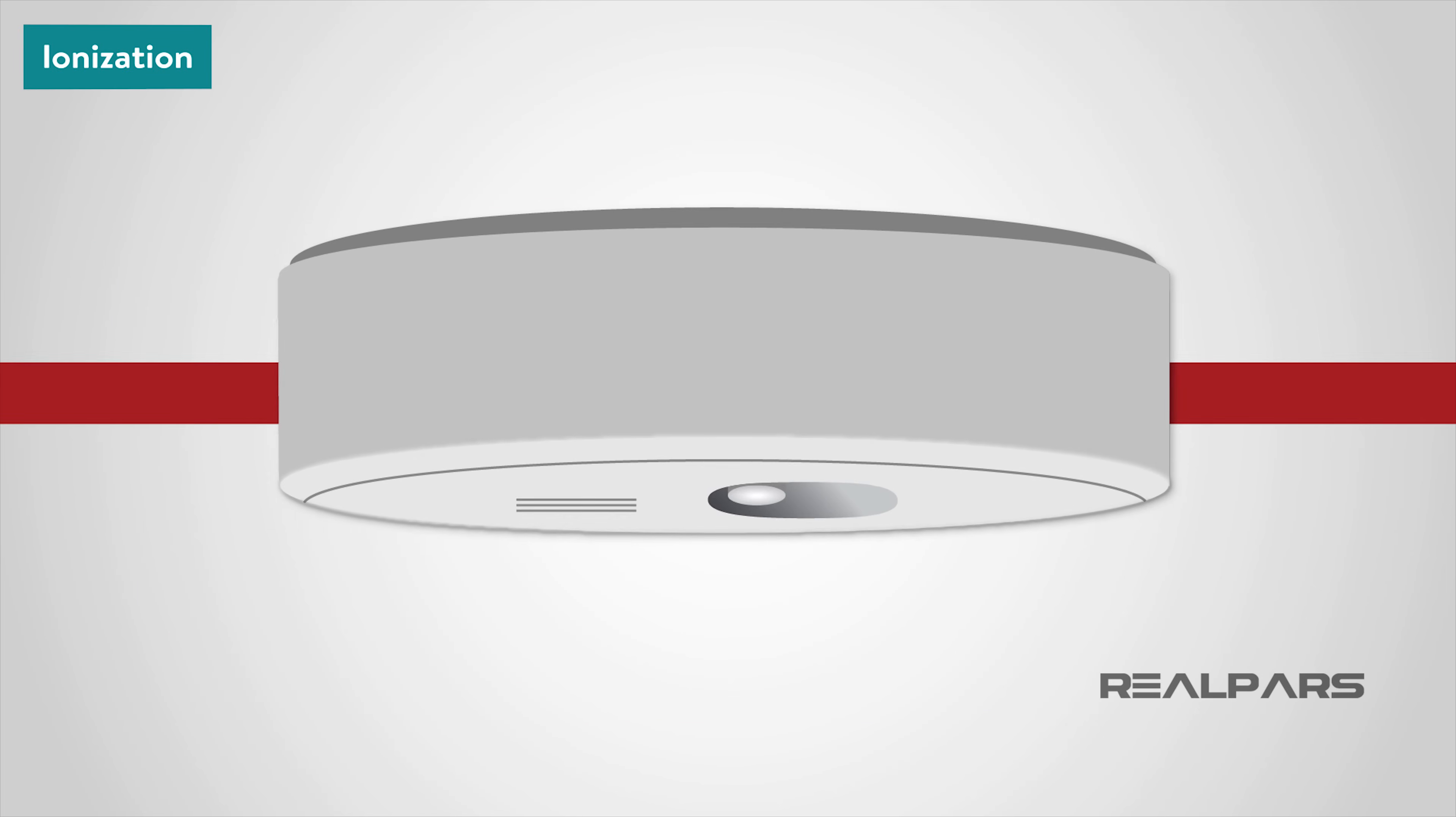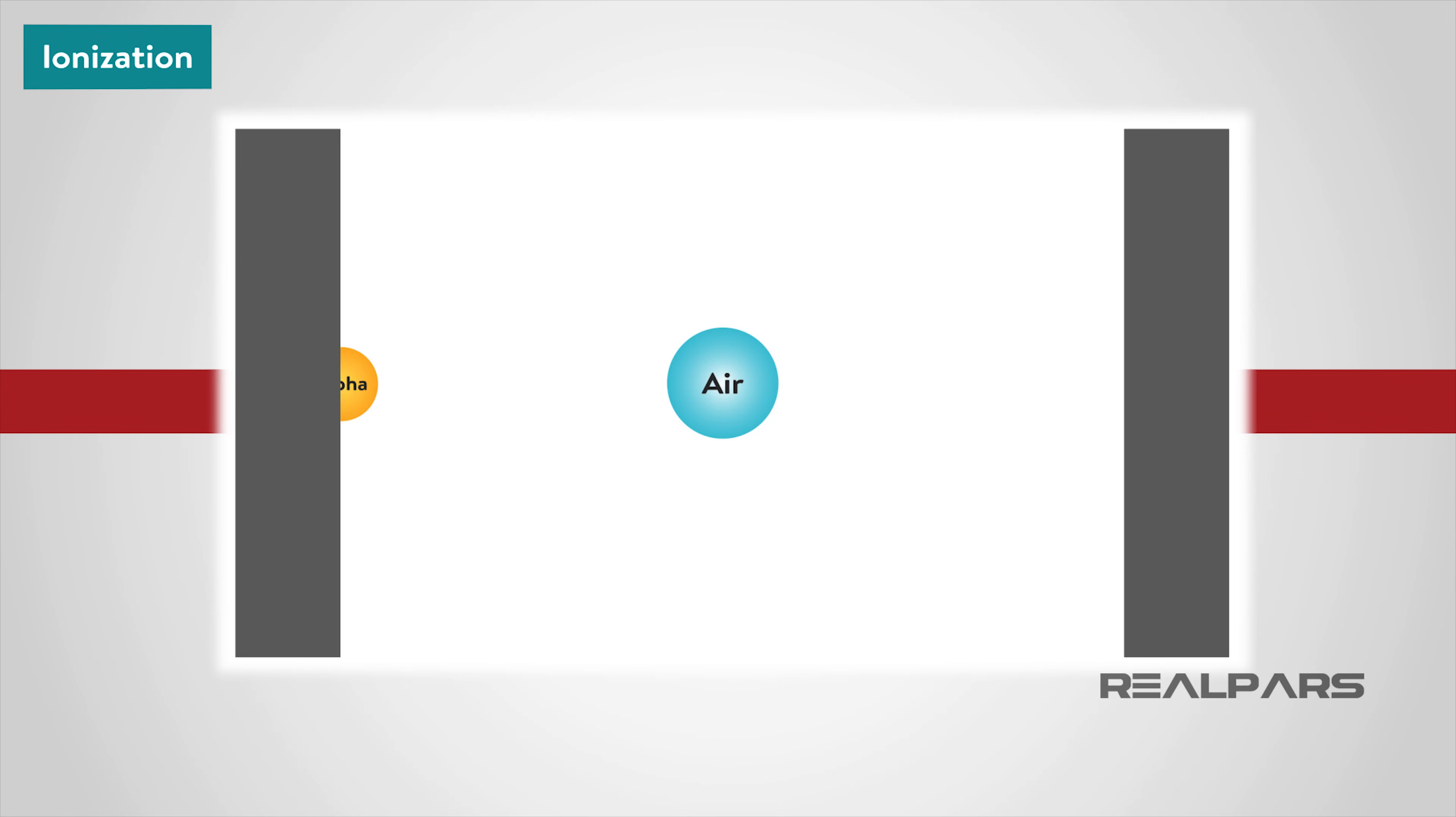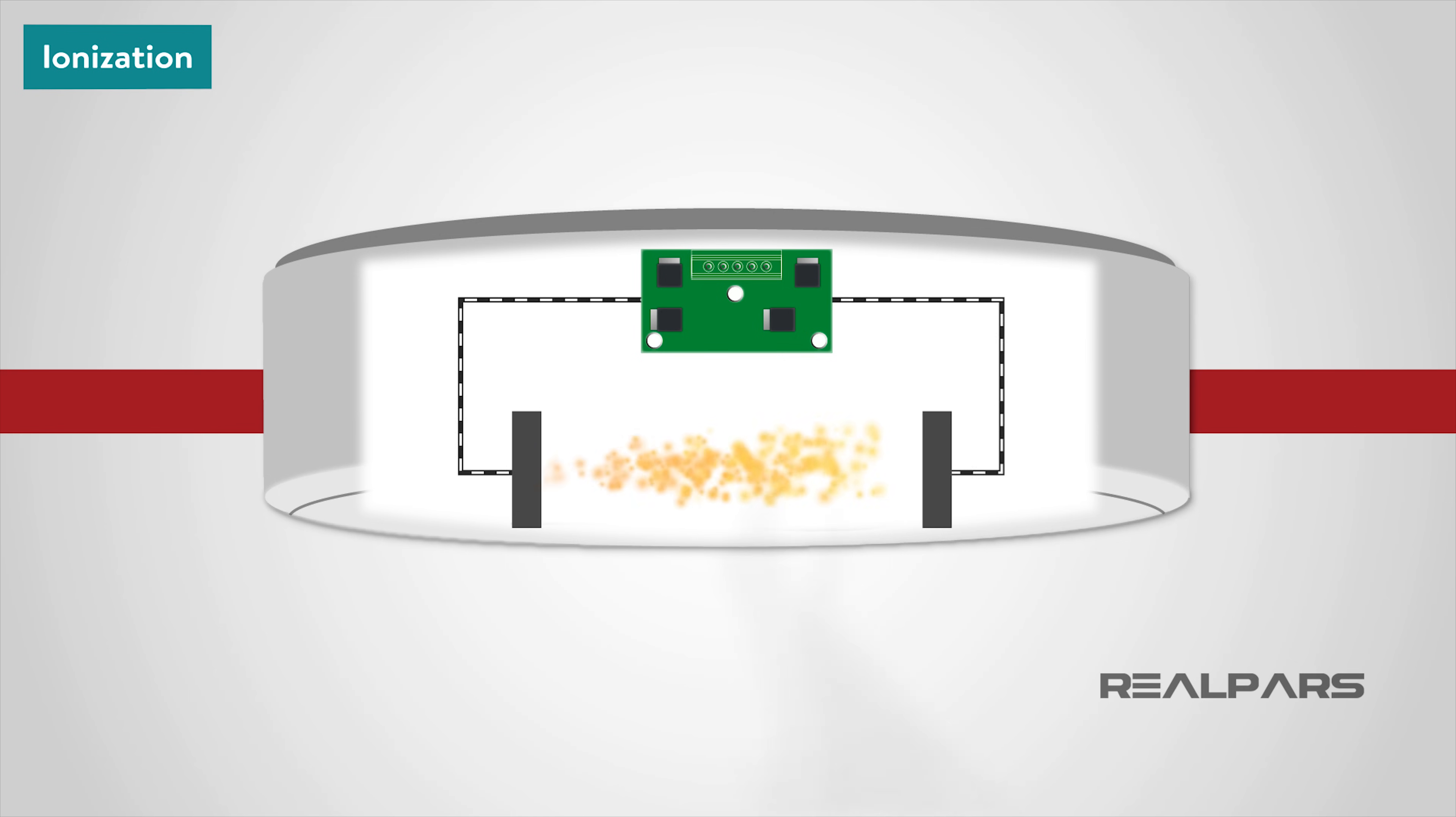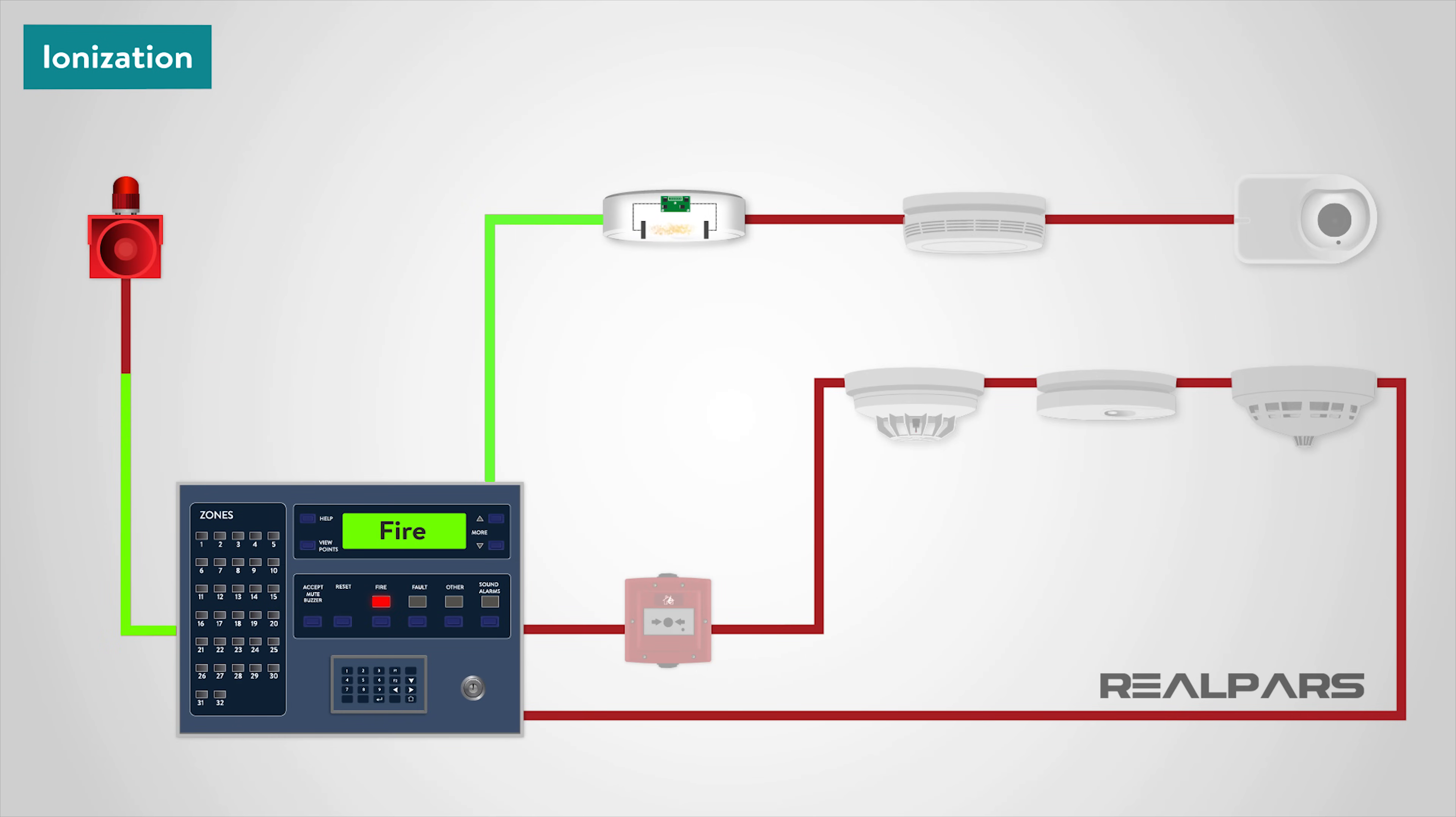An ionization smoke detector generally contains two chambers. The first is used as a reference to compensate for changes in ambient temperature, humidity, or pressure. The second chamber contains a radioactive source, usually alpha particle, which ionizes the air passing through the chamber where current flows between two electrodes. When smoke enters the chamber, the current flow decreases. The drop in current flow is used to initiate an alarm.